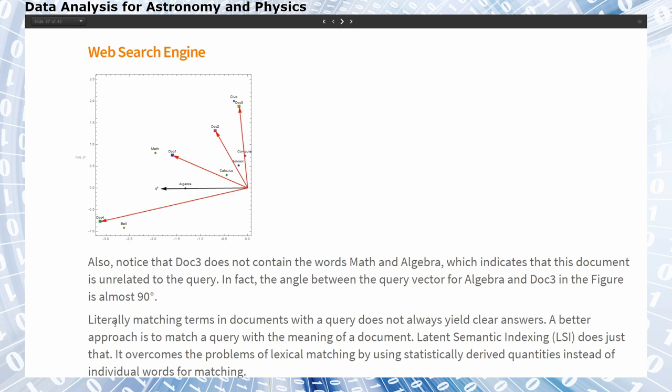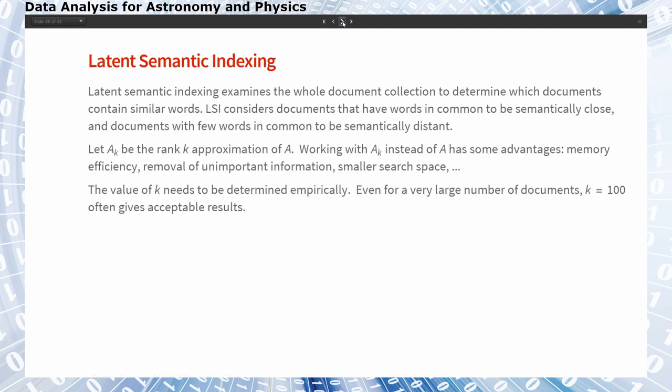This is a nice example, but we also have to consider that literal matching of terms in documents is not always giving us a clear answer. A better approach is to match a query with the meaning of a document. Latent semantic indexing does just that. It overcomes the problems of lexical matching by using statistically derived quantities instead of individual words for matching. Latent semantic indexing examines the whole content collection to determine which documents contain similar words. LSI considers documents that have words in common to be semantically close and documents with few words in common to be semantically distant. We can now compute a quantitative distance or similarity figure for documents.